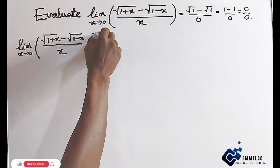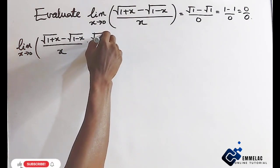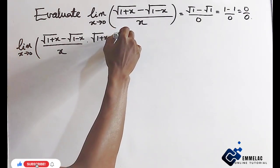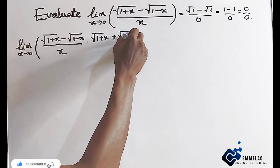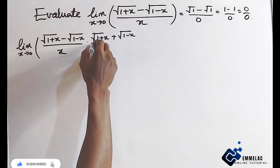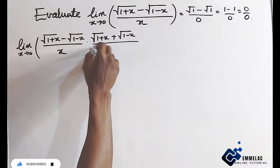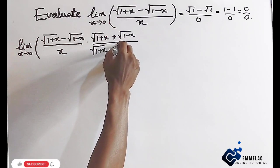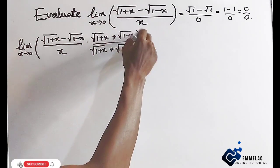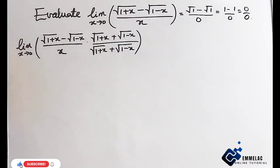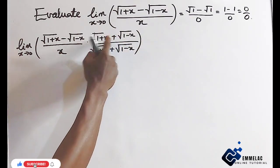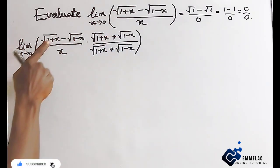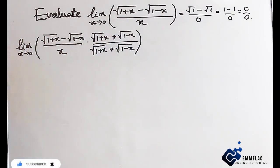We multiply by the square root of 1 plus x plus the square root of 1 minus x, all over the square root of 1 plus x plus the square root of 1 minus x. This is the conjugate of what we have in the numerator.